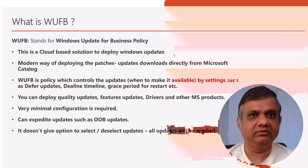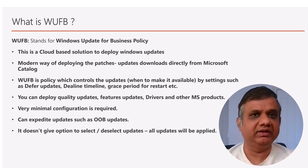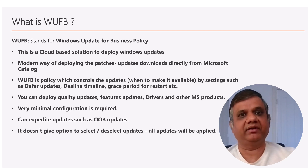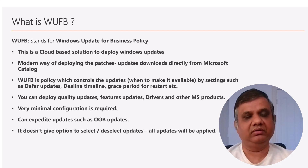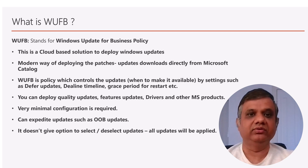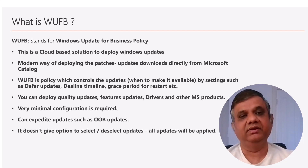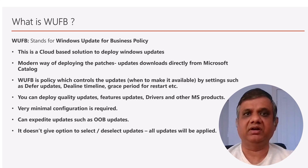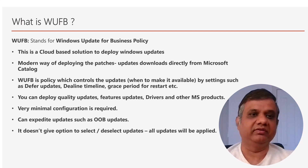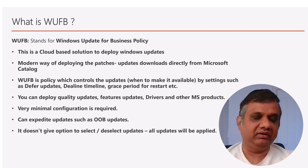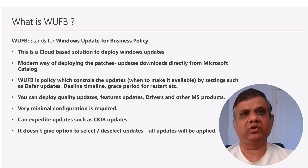Windows Update for Business is a modern way of deploying updates where devices get patches directly from Microsoft — no server or on-premises infrastructure is required. All devices get updates from the internet. The types of updates that can be deployed include quality updates, feature updates, driver updates, and other Microsoft product updates beyond just Windows.